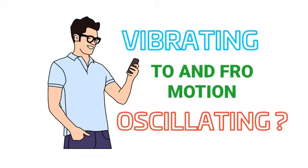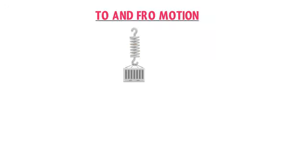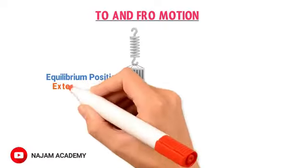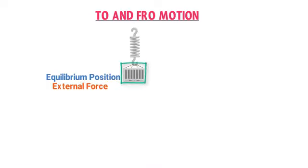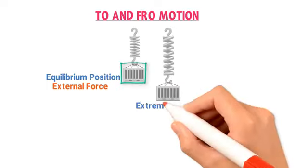Let me teach you the concept of to and fro motion. Consider a vertical spring with a mass M suspended by the spring. The mass M is at its equilibrium or mean position. Now I am interested in displacing this mass M in the downward direction. According to Newton's first law of motion, I need to apply some external force F on this mass M. After exerting force F downward, the mass will be displaced downward — from its equilibrium position to an extreme position.